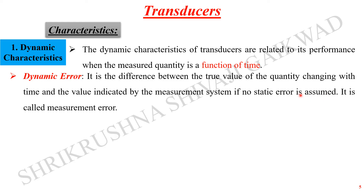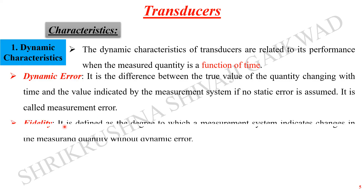Dynamic error is the difference between the true value of the quantity changing with time and the value indicated by the measurement system. It is assumed that no static error is present, so the dynamic error reflects purely the difference due to the time-varying nature of the measured quantity.